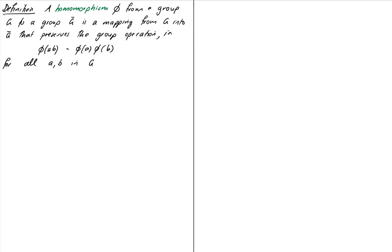A homomorphism phi from a group G to another group G-bar is a mapping from G into — not onto, it's a subtle but important difference — into G-bar that preserves the group operation, i.e. phi of AB equals phi of A times phi of B for all A, B in our group G. So it looks very similar to the definition of an isomorphism except that we've left out the one-to-one and onto parts. The only thing that matters is that the mapping preserves the group operation: if you compose elements A, B before doing phi you get the same thing as passing A, B through phi first and then composing them in G-bar afterwards.